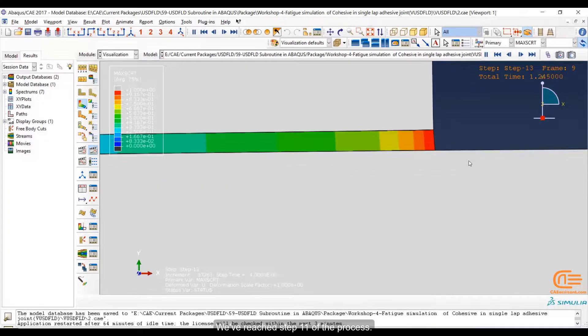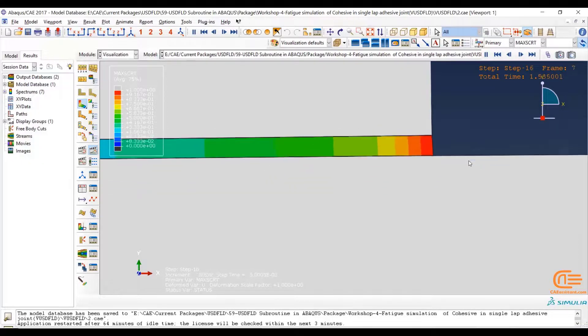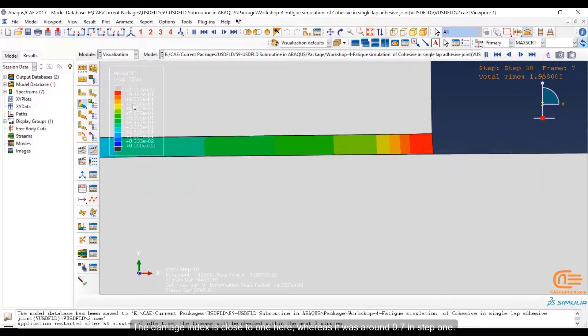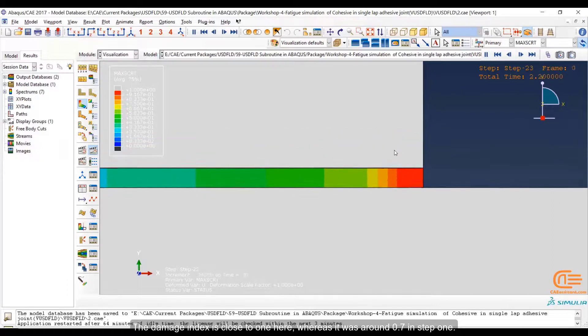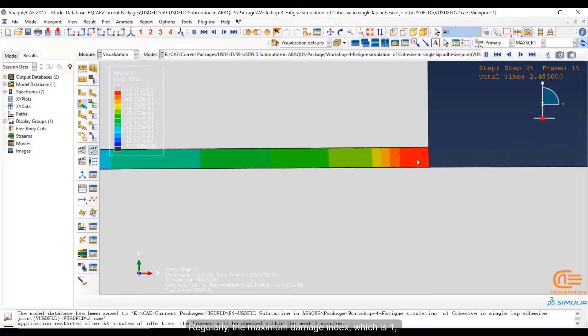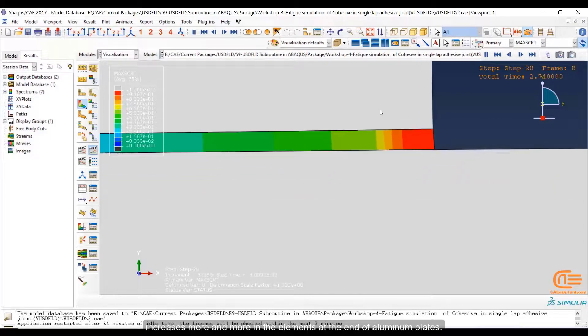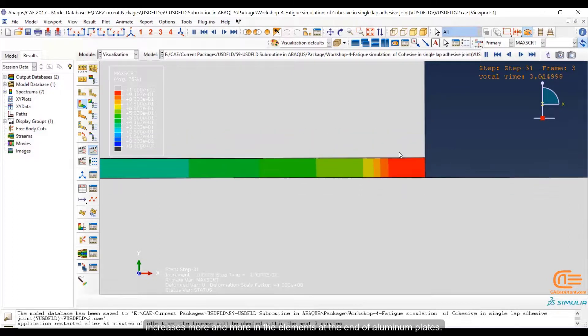We have reached step 11 of the process. The damage index is close to 1 here, whereas it was around 0.7 in step 1. Regularly, the maximum damage index, which is 1, increases more and more in the elements at the end of the aluminium plates.